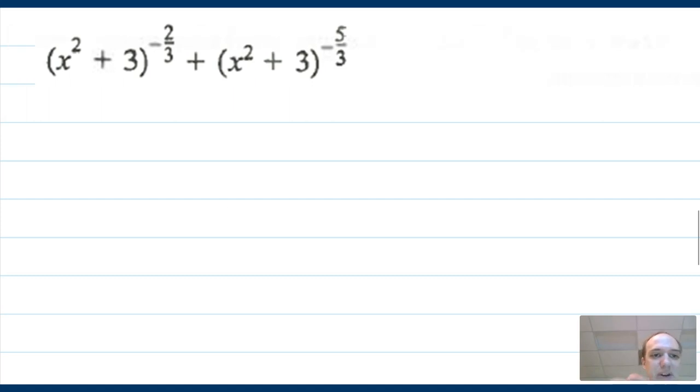I'm just going to do two more examples in here in this quick video. First one, x squared plus three to the negative two thirds, plus x squared plus three to the negative five thirds. So again, following my rule, this guy is going to need to be factored out because negative five thirds is smaller than negative two thirds on a number line. I'm going to give myself some space to do division and set up a bracket.